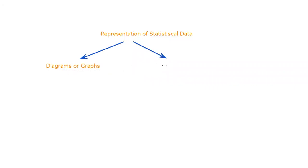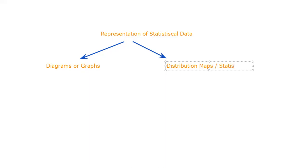Statistical data can be represented in the form of diagrams or graphs. Statistical data can also be represented in the form of maps, and those types of maps are called Distribution Maps — or sometimes we call them Statistical Maps. So diagrams or graphs, distribution maps or statistical maps — this is how different types of statistical data are shown. Now, when we talk about diagrams or graphs, how can different types of data be shown?